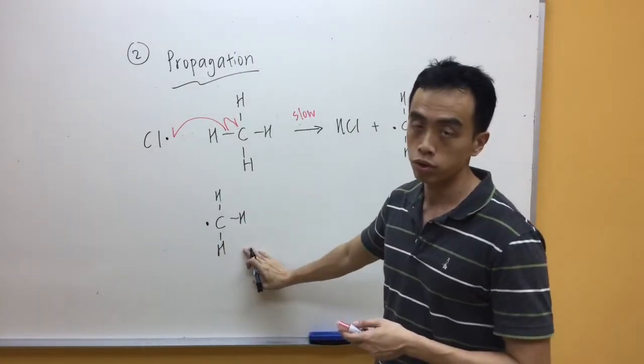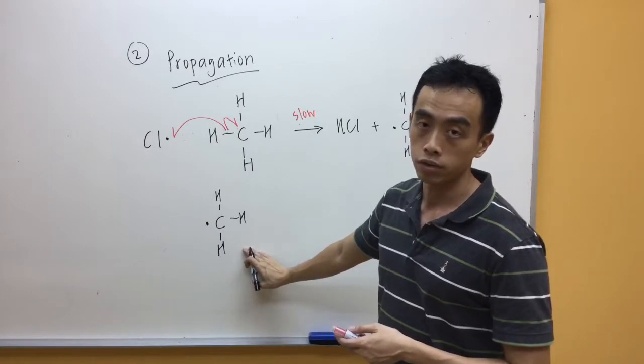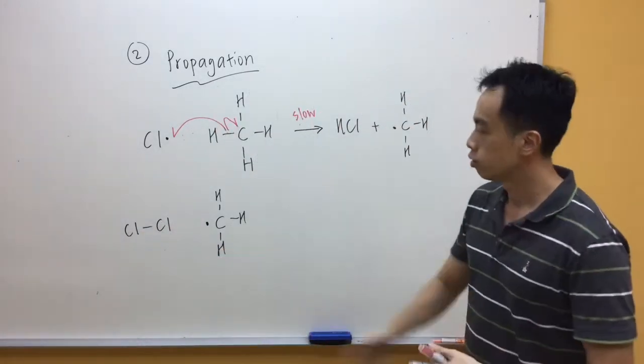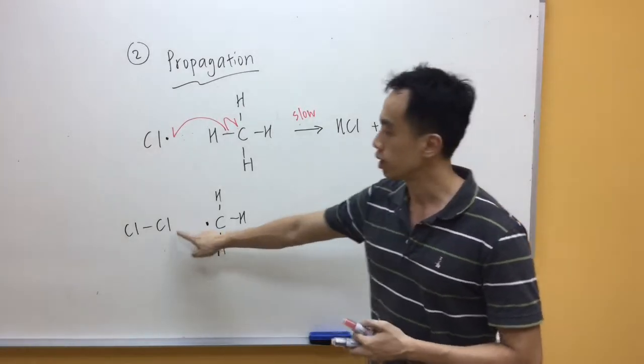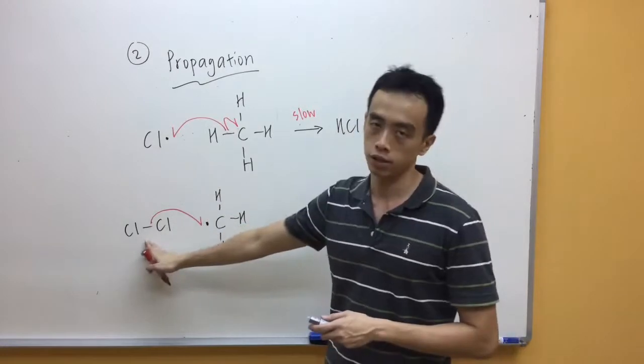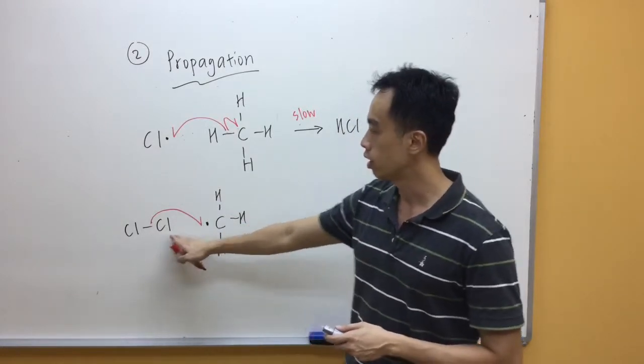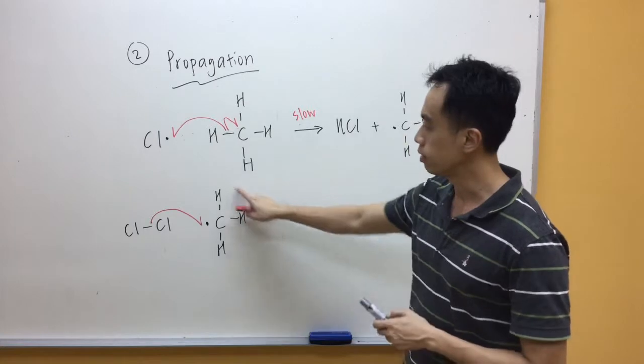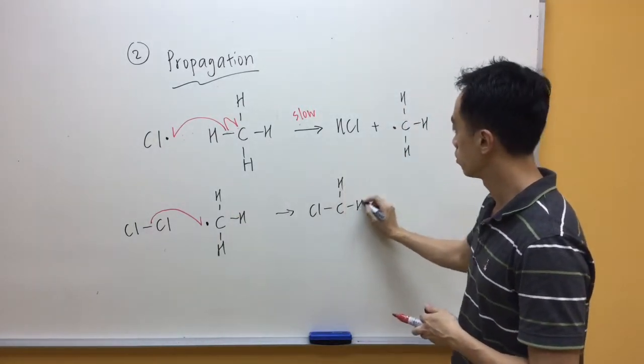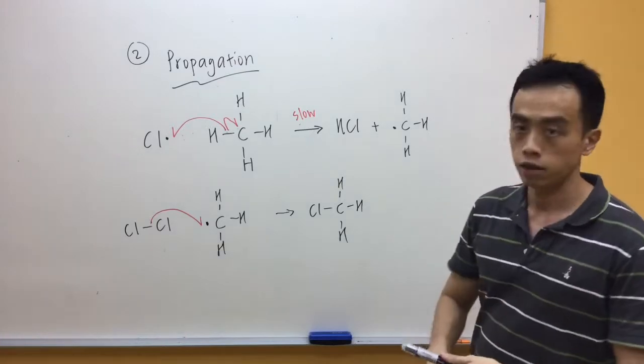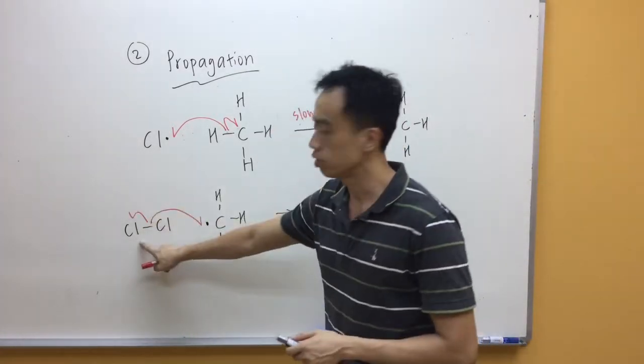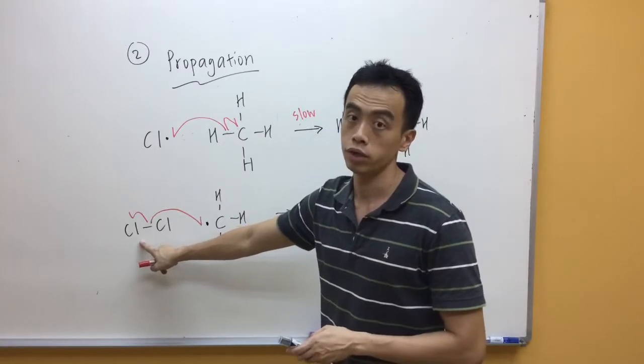And what this methyl group will do is, it will react with our Cl-Cl. So what this carbon will do is, it will take our chlorine. So essentially this Cl-Cl bond will break. So this chlorine will bind with carbon to form a CH3Cl. Then my chlorine will have to take back its own electron. This will regenerate your chlorine radical.